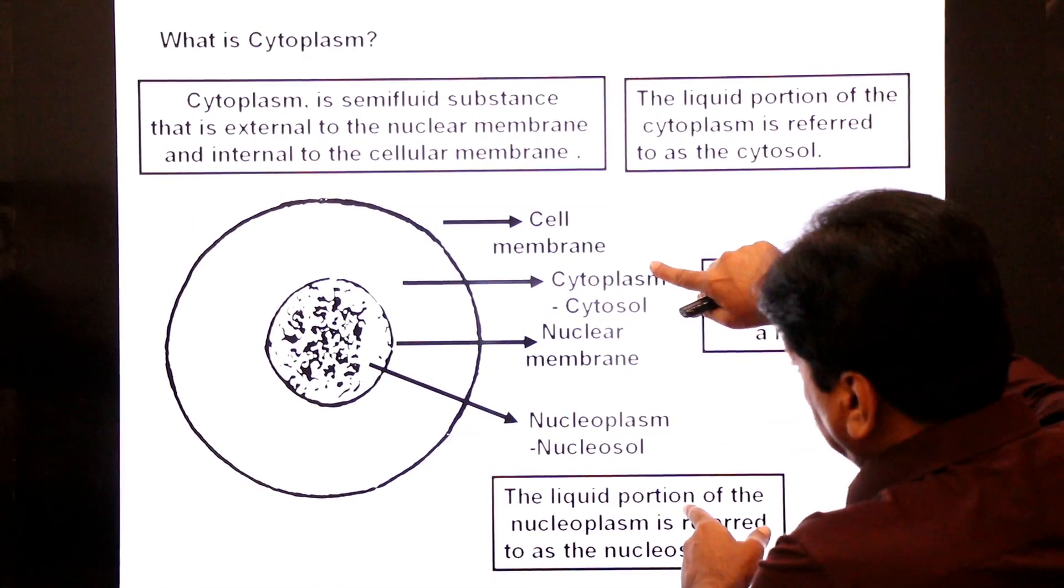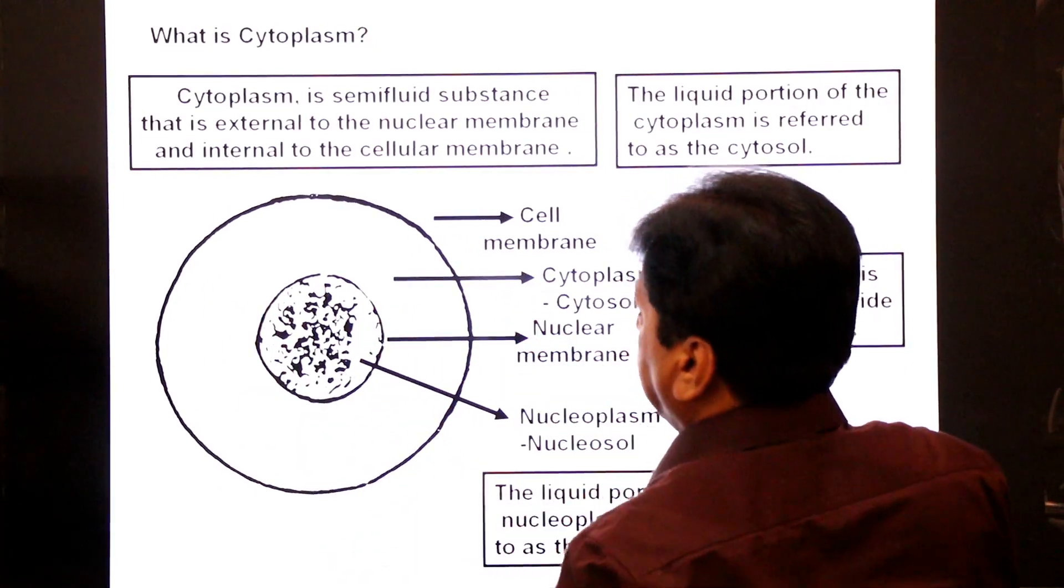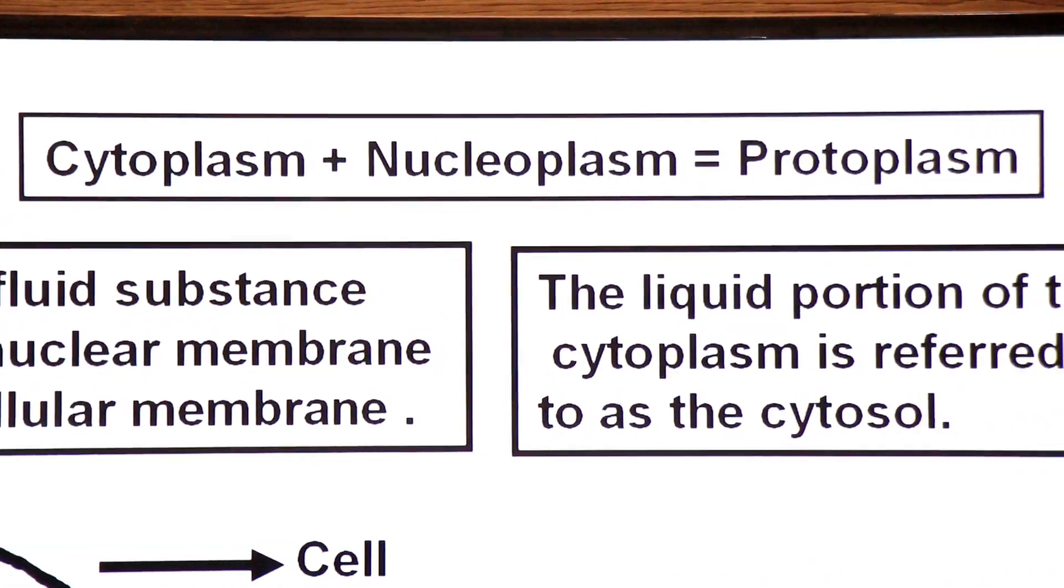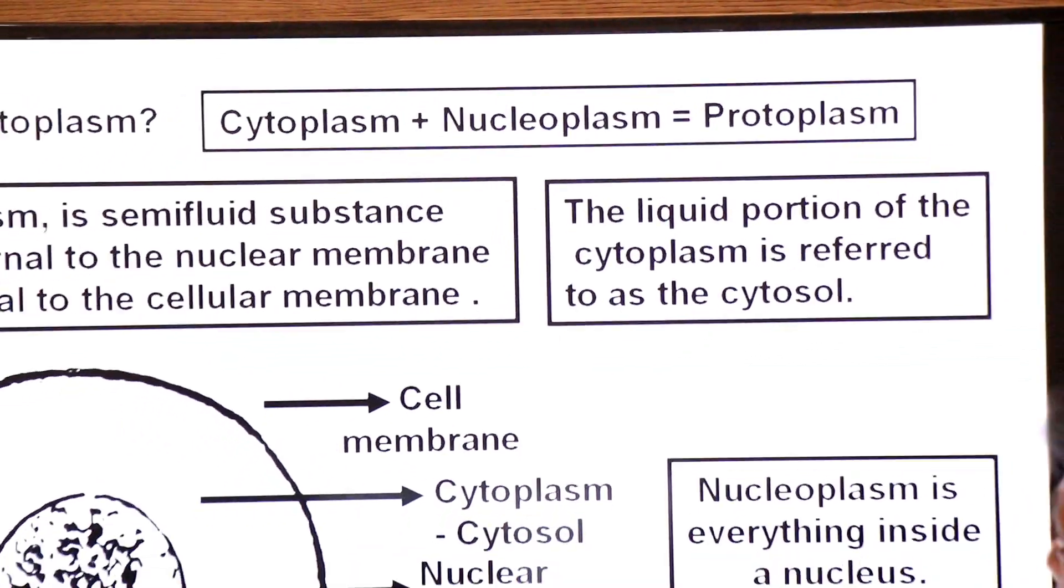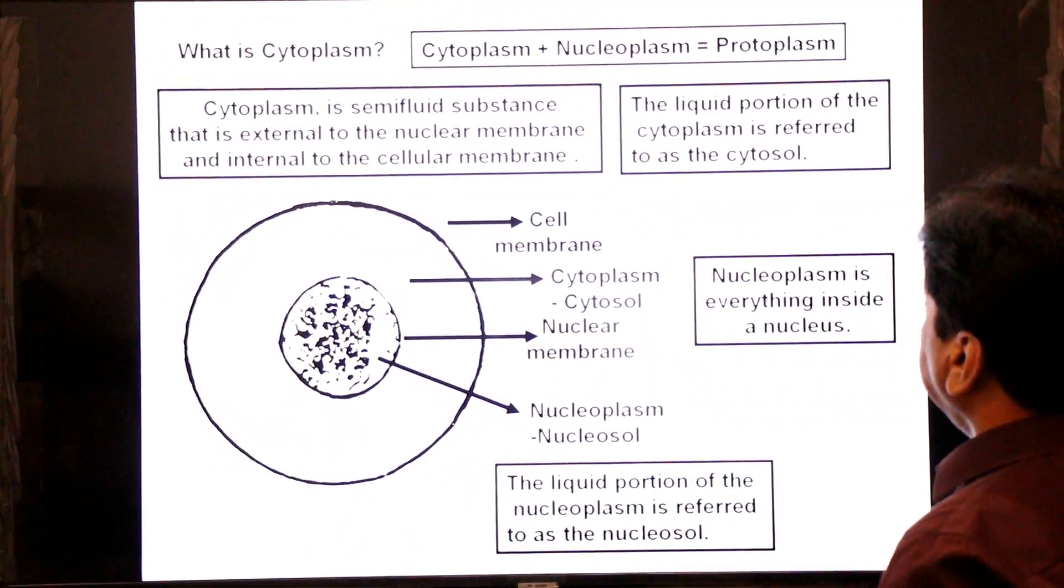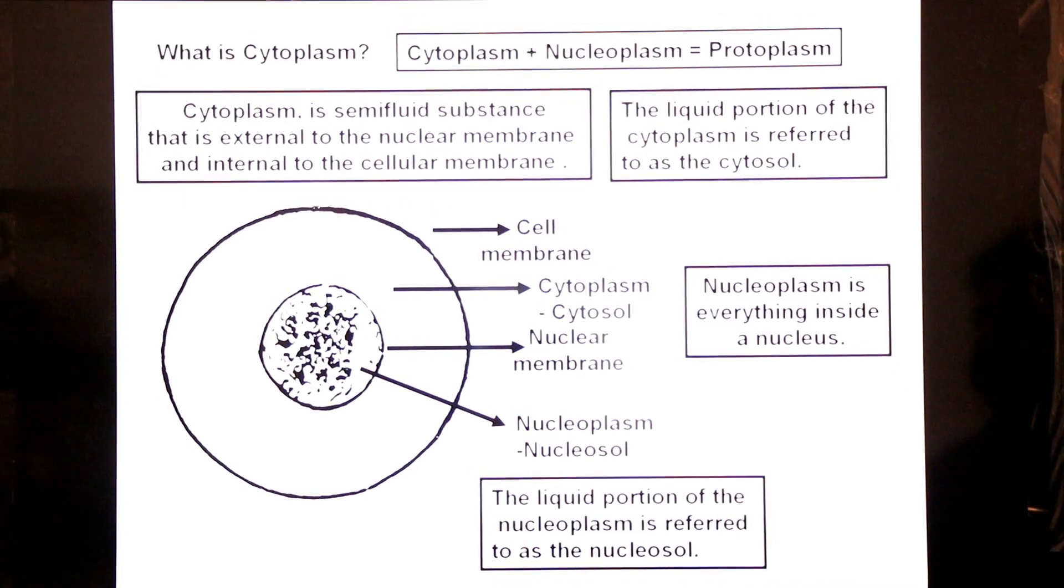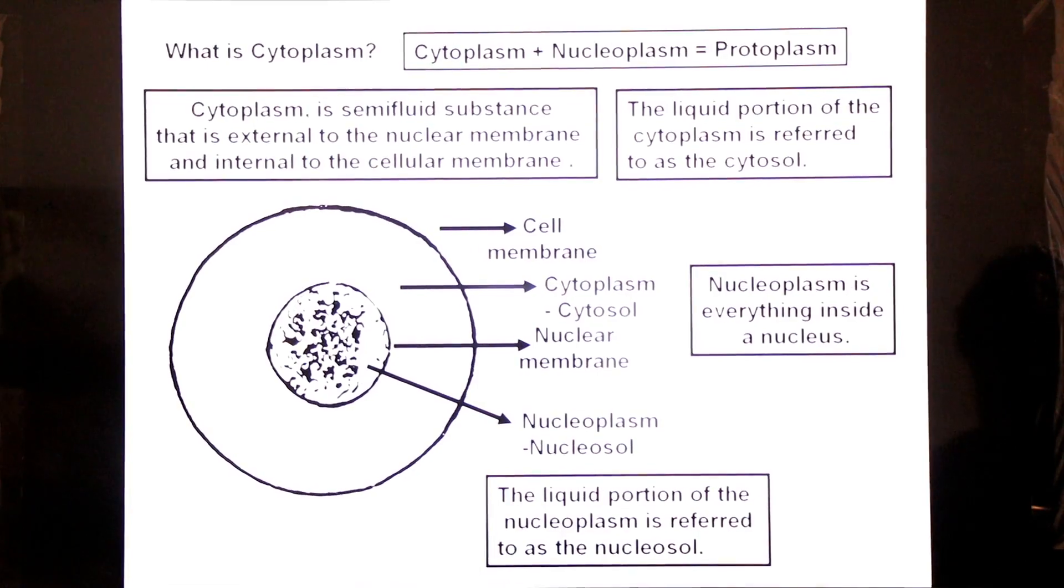Note this: cytoplasm and nucleoplasm, both combined together is called protoplasm. What is protoplasm? Cytoplasm plus nucleoplasm is known as protoplasm. So cytoplasm and nucleoplasm together form the term protoplasm. Focus on the whole slide and take a screenshot, dear students.